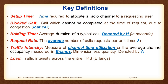Traffic intensity will be given the term Erlang in mobile communications, denoted A. There is also a per-user traffic intensity AU = λ × H, and a total traffic intensity A = U × AU where U is total number of users. Load is the traffic intensity across the overall trunked radio system. One Erlang means a channel is kept busy for one full hour — it represents the intensity of traffic.